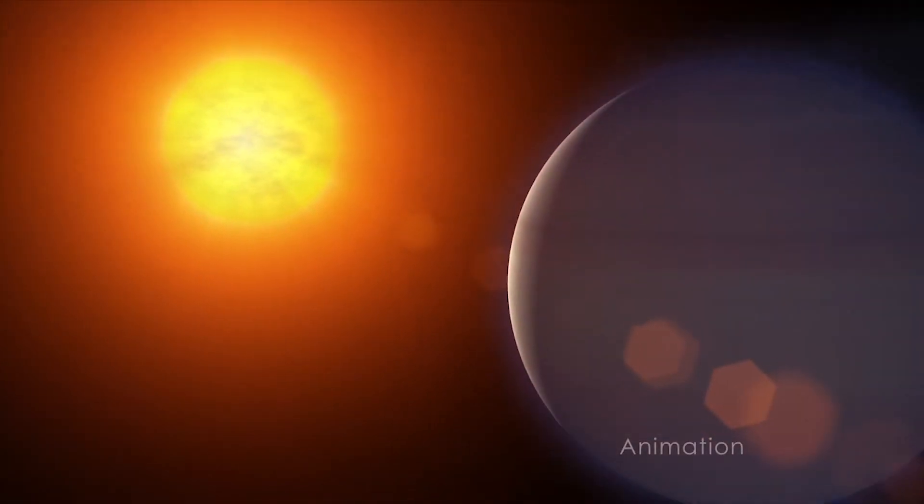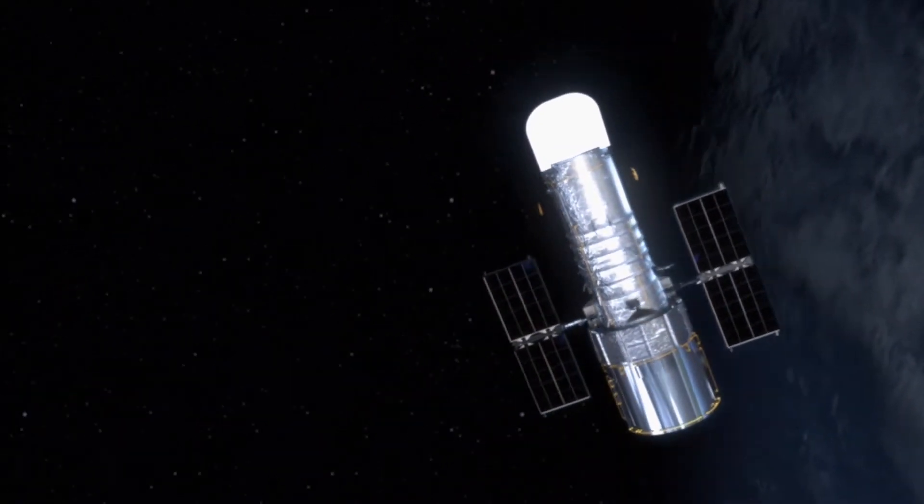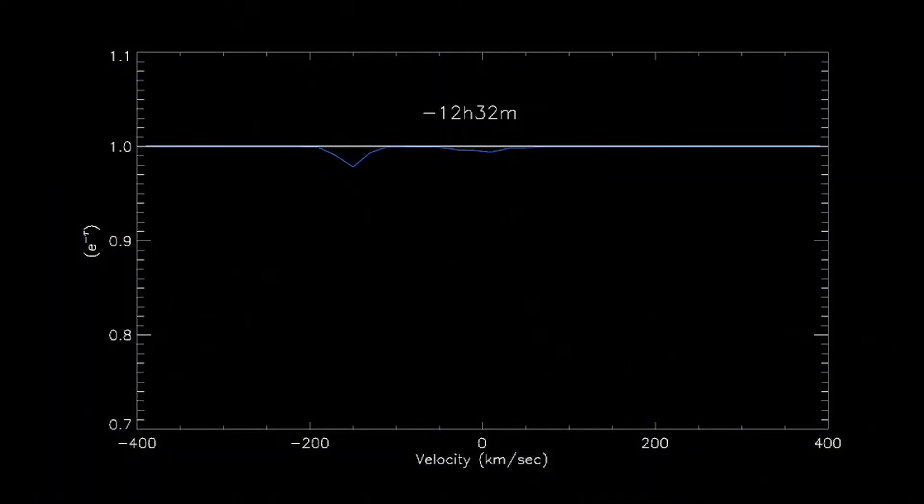But when they looked again in 2010, there was no trace of an escaping atmosphere. Yet when astronomers looked once more in 2011, they saw dramatic evidence that the atmosphere was eroding. Hydrogen gas was rushing away from the planet at speeds over 300,000 miles an hour. What had changed?